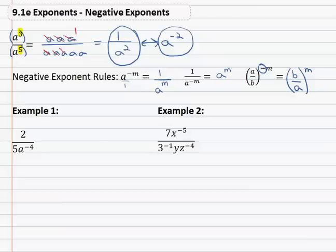So for example, if we have the problem 2 over 5a to the negative 4, the negative exponent needs to move. Be careful to note the negative exponent here is only on the a.